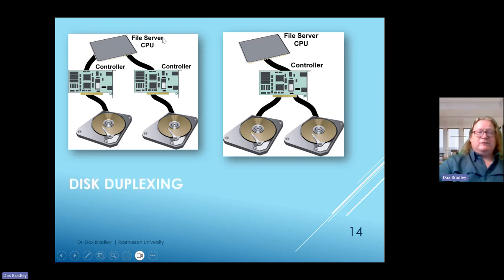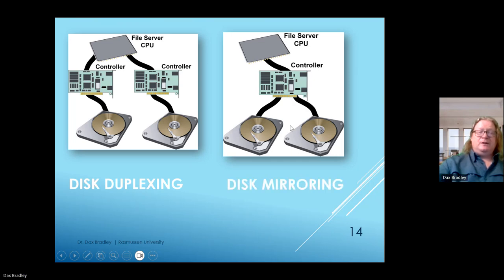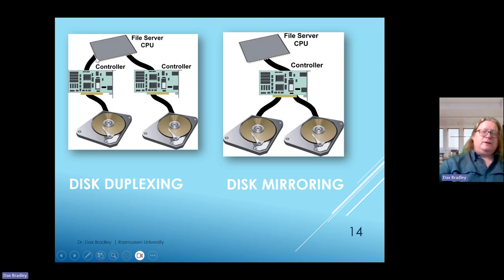Conceptually, you can have your file server on disk duplexing on the CPU with two separate controllers—one controlling each disk—or with one controller controlling two disks, which is mirroring. If the controller fails in the mirroring setup, you're up the creek. With duplexing, you've got redundancy because the same amount of data is written to both disks.